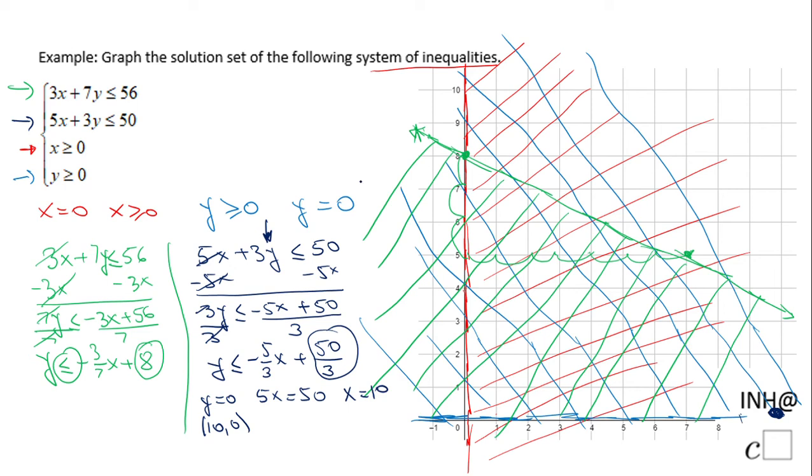We have y equals negative 5x plus 50 over 3. If I make x equal 7 in this y form, I'm gonna get negative 5 times 7 plus 50 over 3, and that will be negative 35 plus 50, that will be 15 over 3, which is 5. So we get this point 7 and 5.